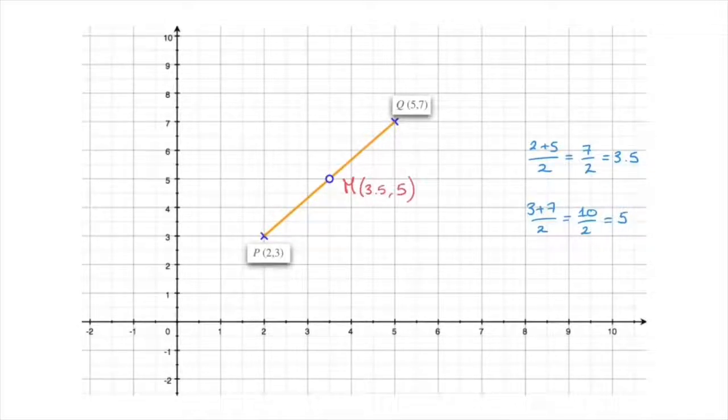Now, one could argue that we didn't need to do all these calculations, and that we could have read the coordinates of point M directly off the graph, which in this case is true. But the method we've just illustrated can be particularly useful if we don't have a graph, or even if the coordinates aren't nice round numbers. And the example we've just seen here illustrates a formula that we'll need to know.